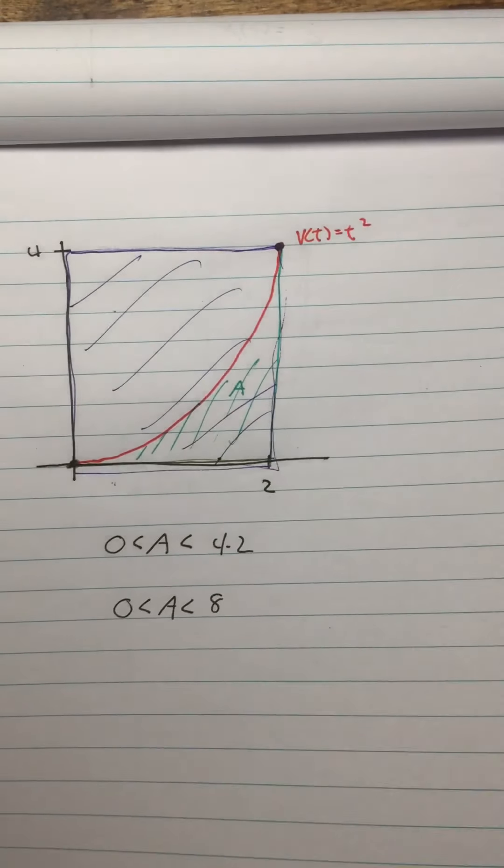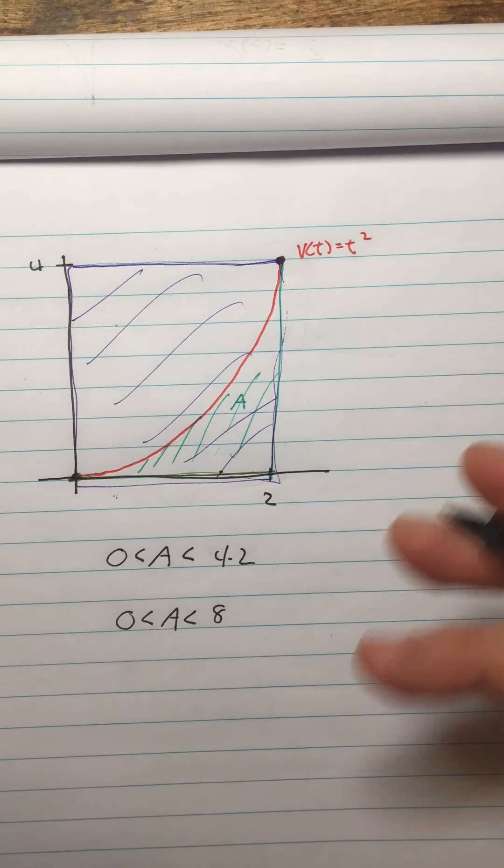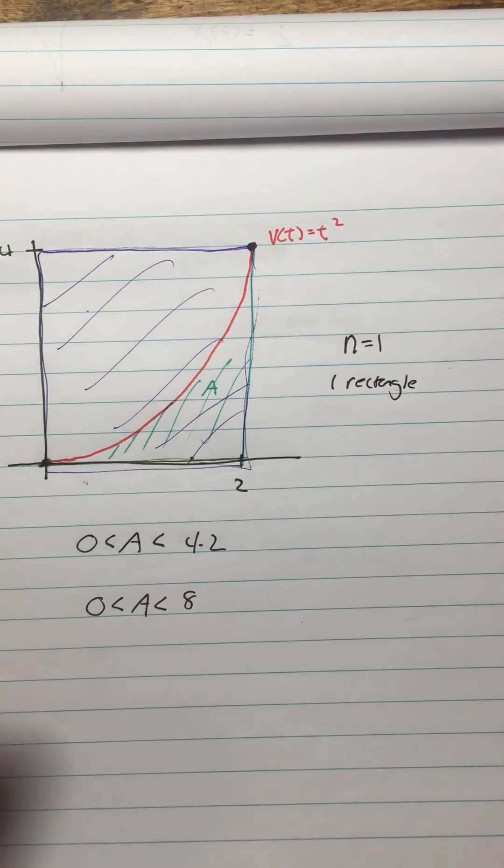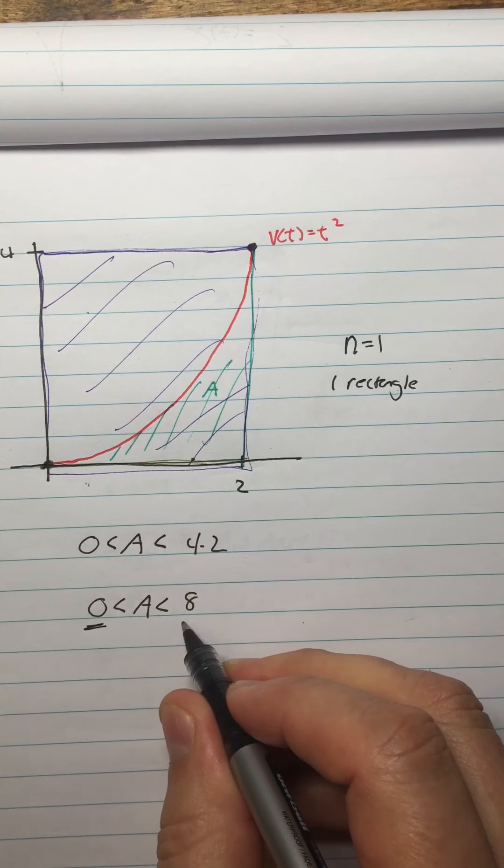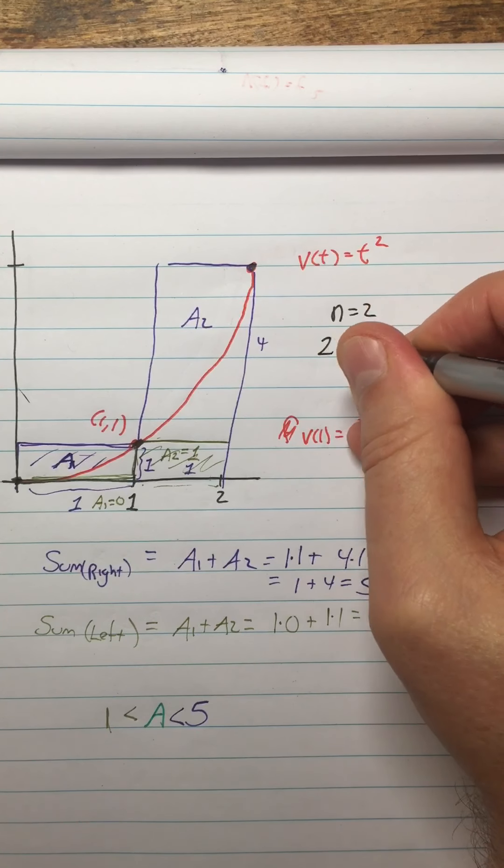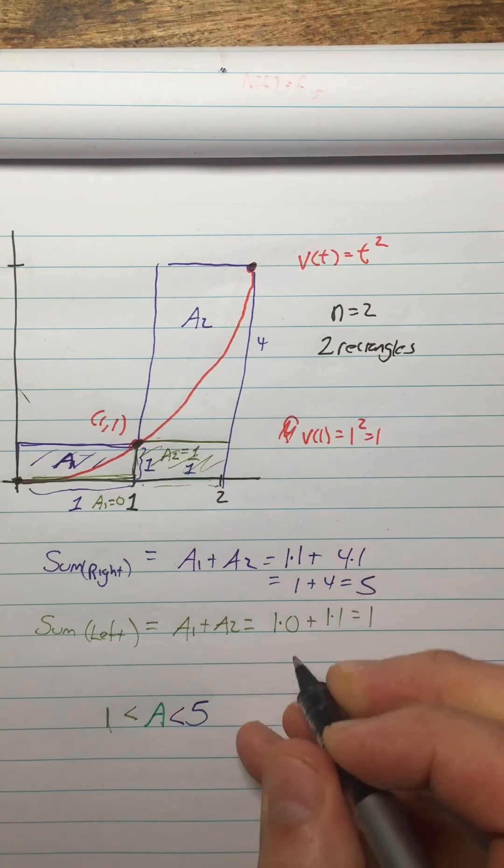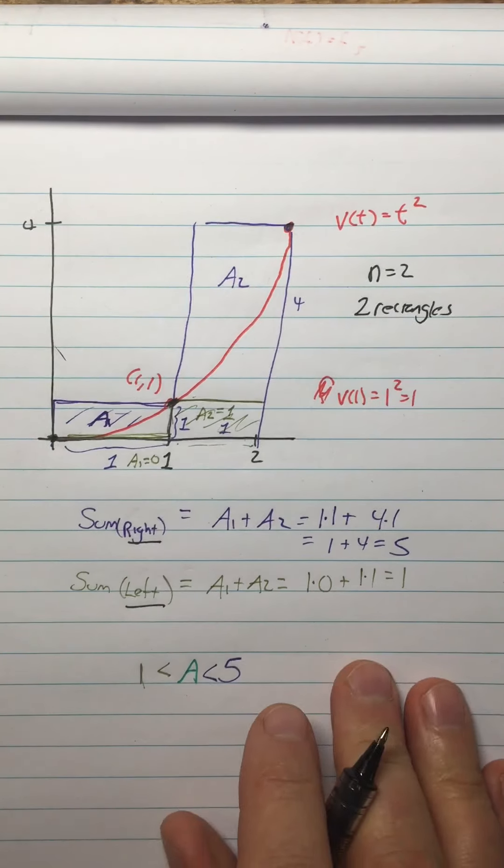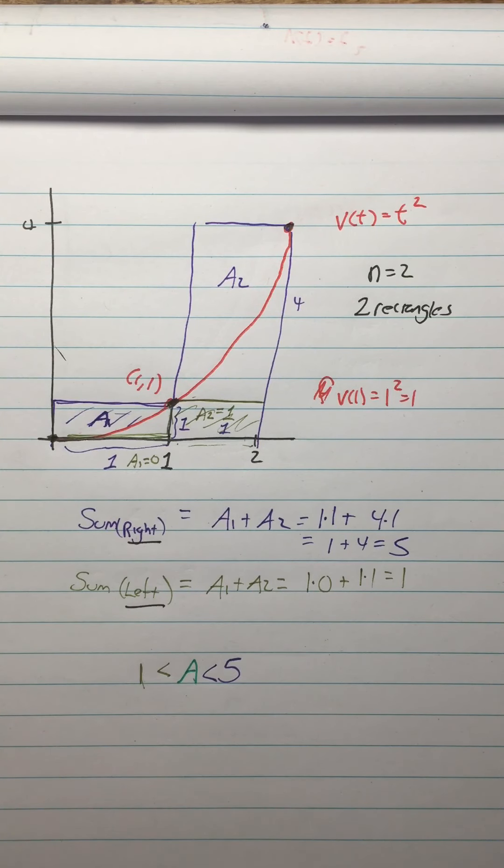Why don't you see if you can come up with bounds like this using four rectangles instead of two. Look what we did. This is one rectangle, so we say n equals 1, one rectangle. And what we've found here is the left sum and the right sum. This is n equals 2. We have two rectangles. And we have the right sum and the left sum and the areas in between them. Why don't you see if you can find the sum from the left and the sum from the right for n equals 4, and get an even tighter constraint from A. So I'm going to let you do that. And then on the next video, I'll share my result for it.